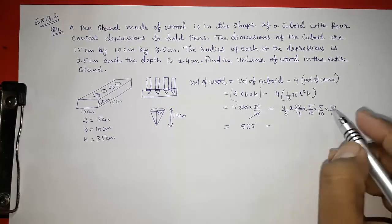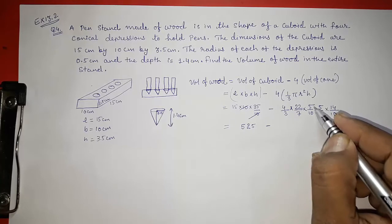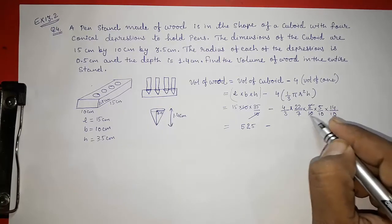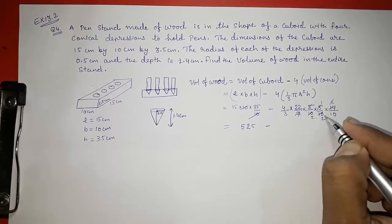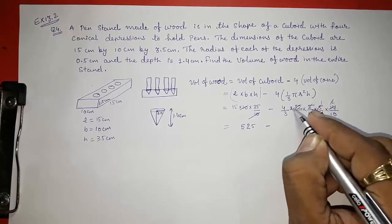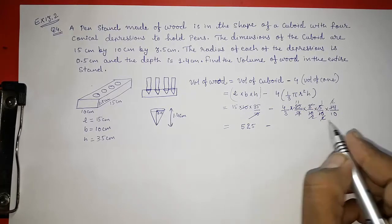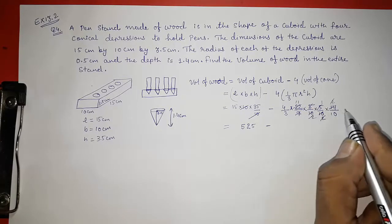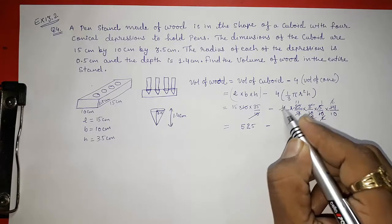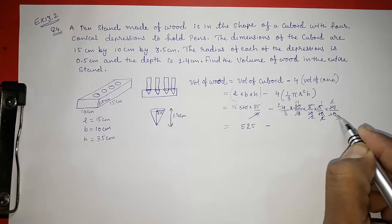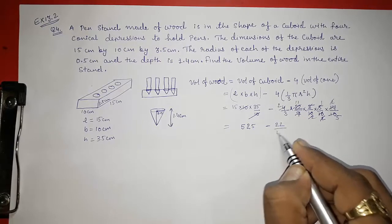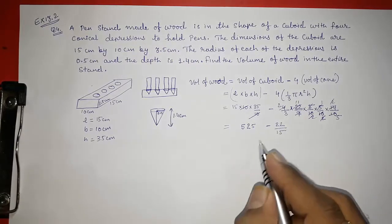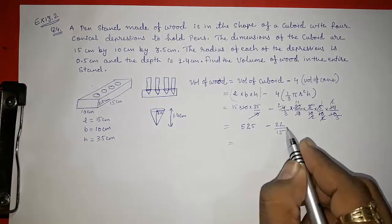Here also we can do cancellation. Directly I think this will become 5 by 1, 2, 1, 2, 7, 1, 2, 2, 2 get cancelled, 1, 11. Still, can we cancel anything? Yes. 2, 2 and 5. So 11 into 2, 22 by 3, 5 is 50. So this way we can find out this one.